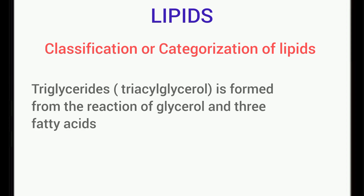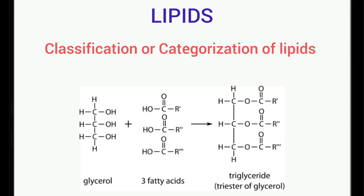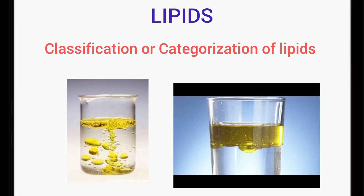The third group is triglycerides. Triglyceride is formed from the reaction of glycerol and three fatty acids. As you can see from the image, glycerol reacts with three fatty acids to form triglycerides. This reaction is a dehydration reaction, leading to loss of water, and what is formed is triglyceride, which is insoluble in water.